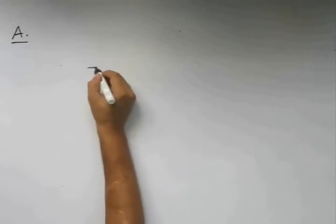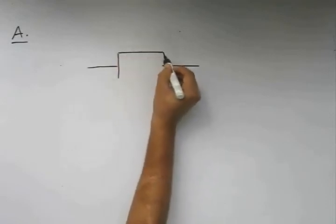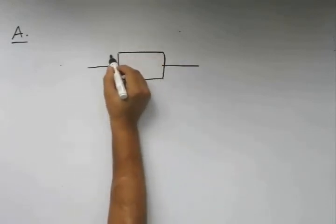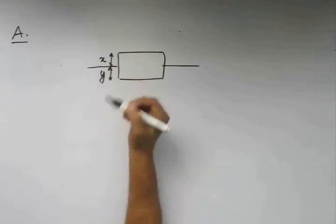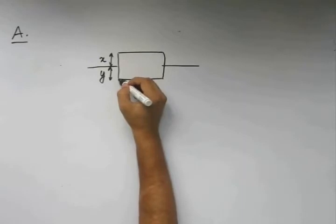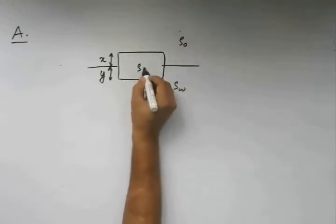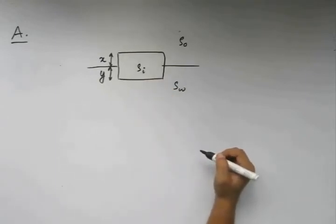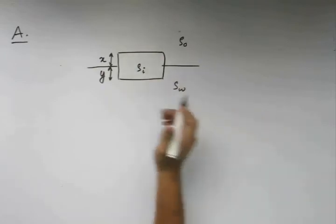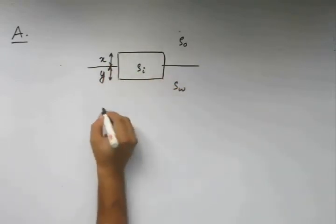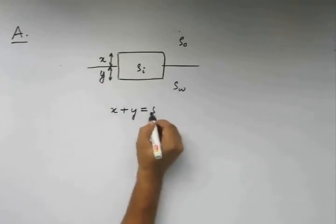Let us say we draw the interface of oil and water and this is our ice block or ice cube. From the statement of our problem we know that one side of this cube is going to be 5 centimeters. So we have x plus y equals 5 centimeters.